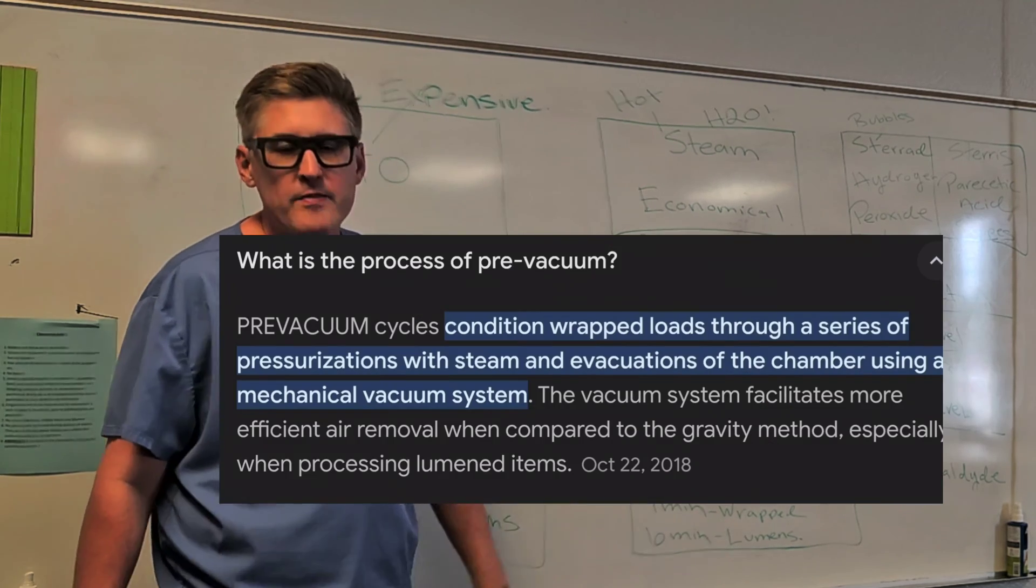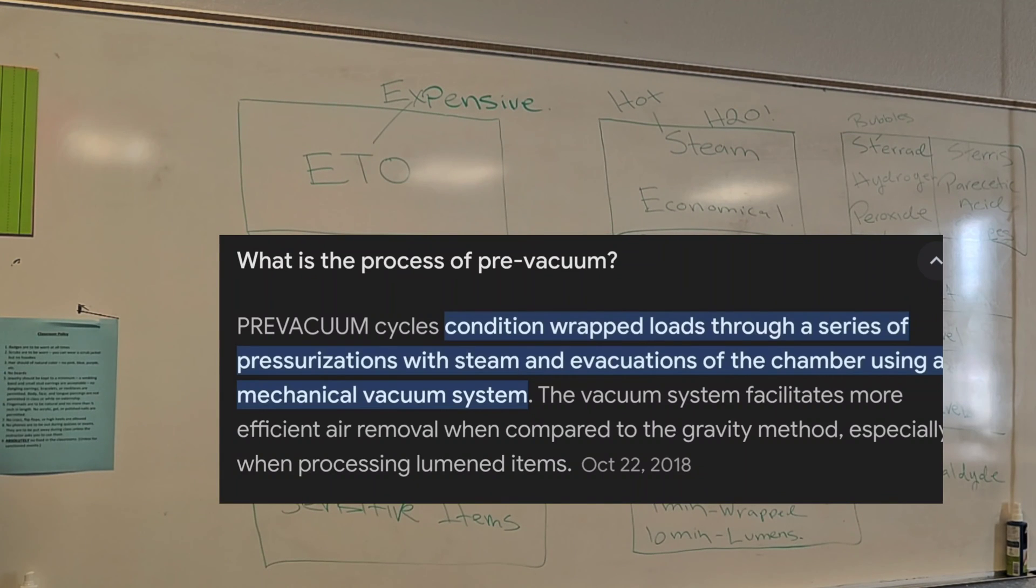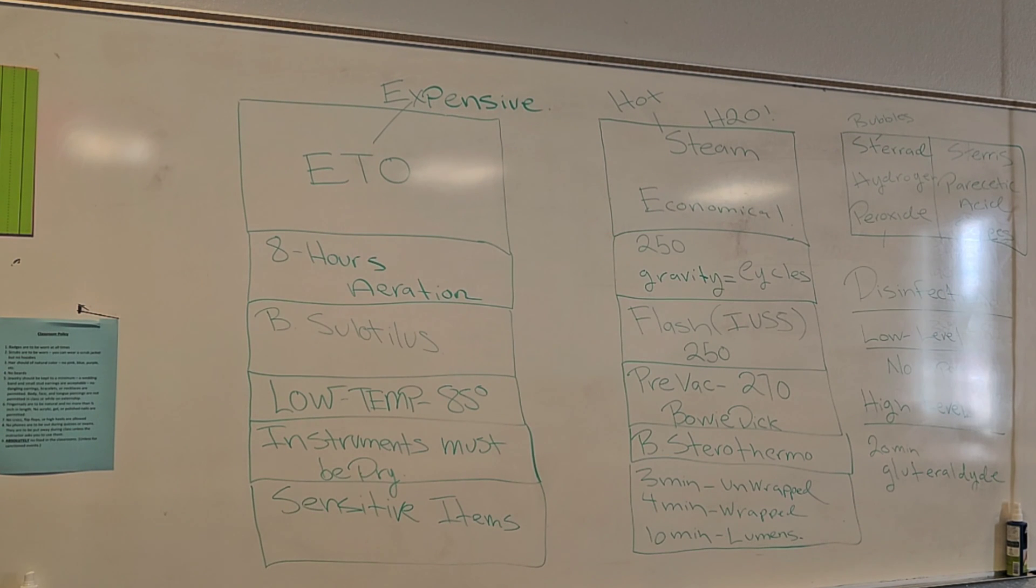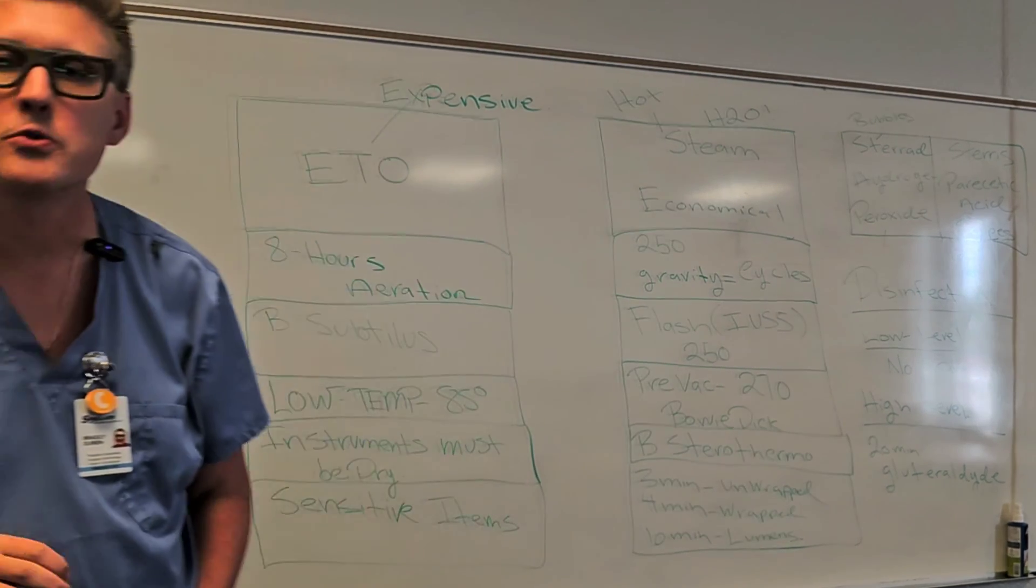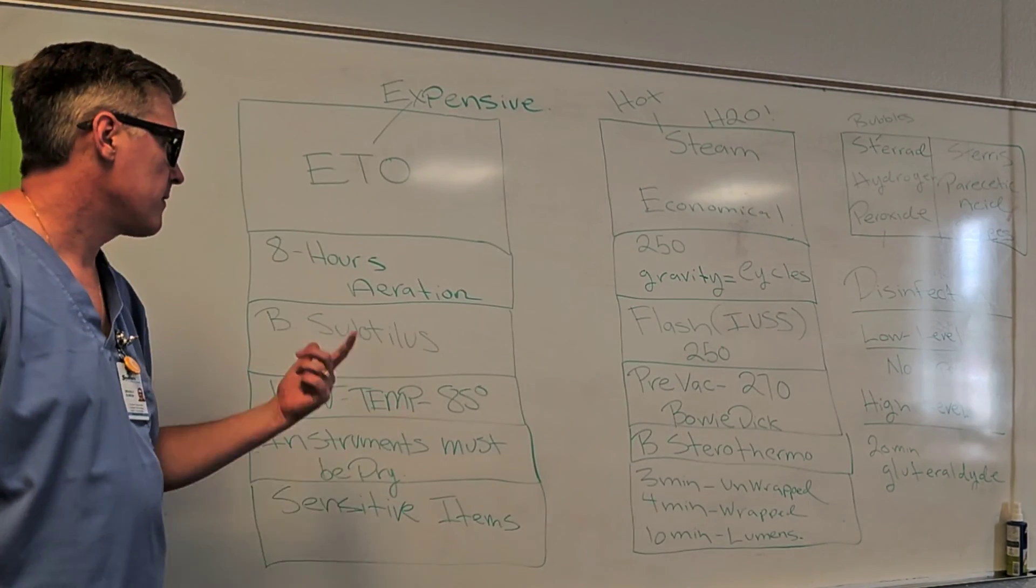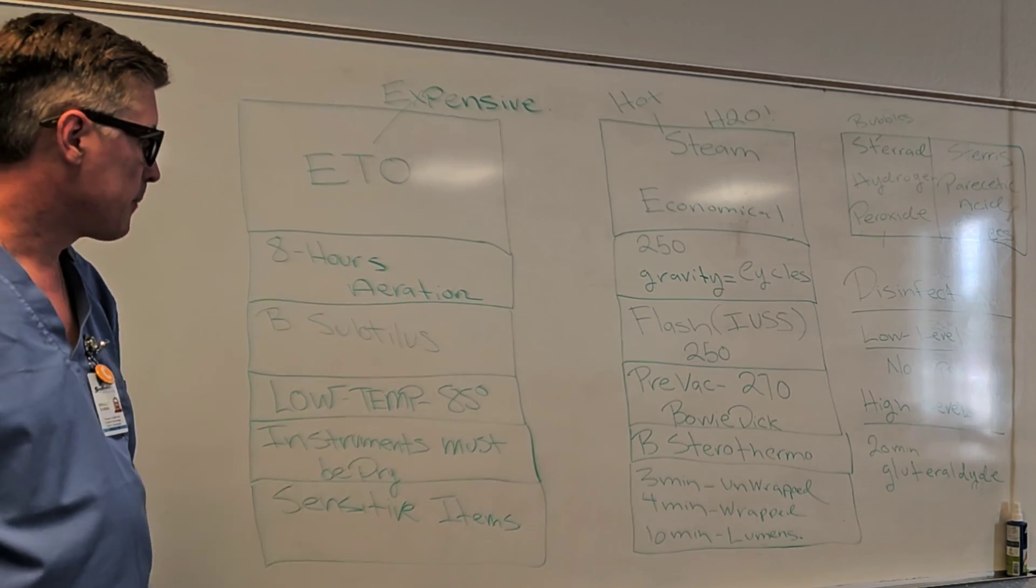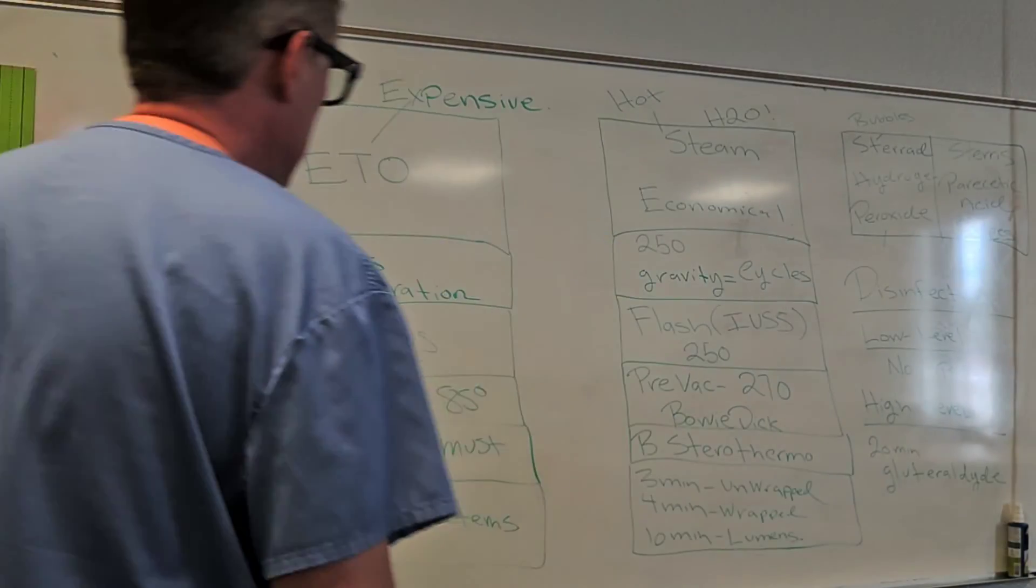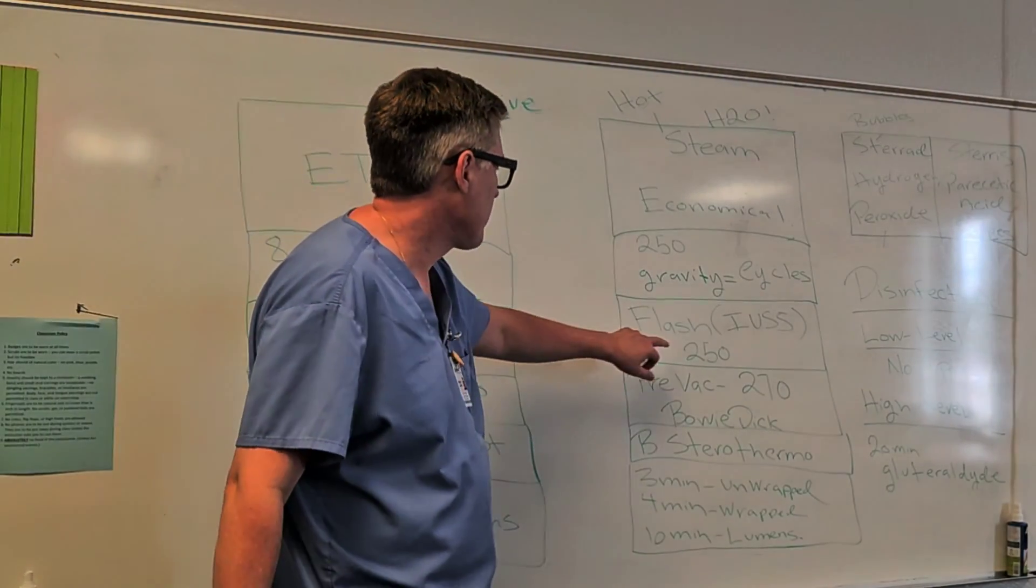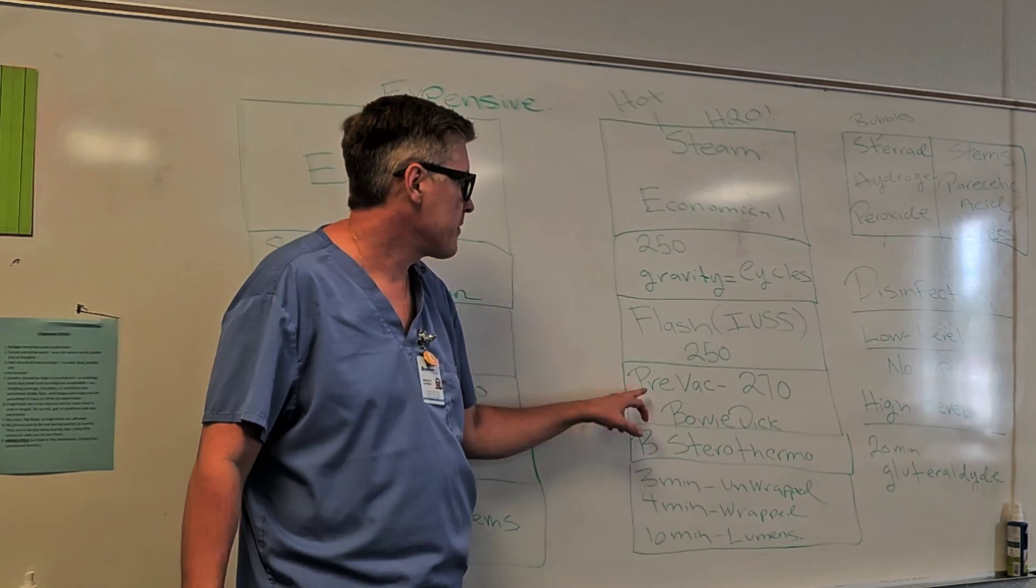250, 270 range is where steam or a flash sterilizer can be. But when you think of gravity, 250, when you think flash, you know, you're doing it quickly, 250. Something called a pre-vacuum system. They use that, it can range from that 250 to 270 range. But if it says pre-vacuum on a CST exam, it's going to be 270 all the time. If it's a flash sterilizer or gravity could range in that 250 range.